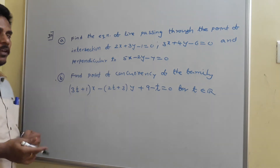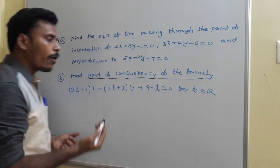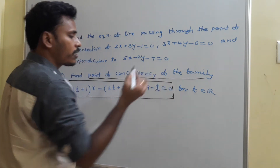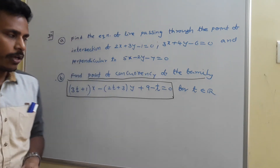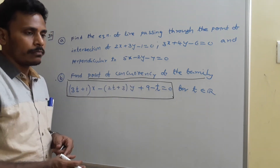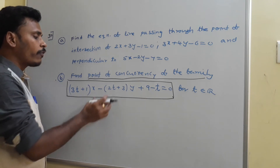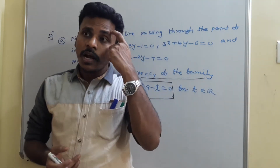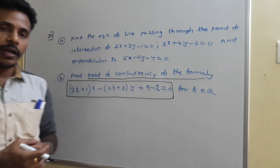I will solve part B first. We need to calculate the point of concurrency of the family, where T belongs to any real value. If you replace T with any number, every value of T gives one line, and since we have infinite real numbers, we get infinite lines — all belonging to the same family, all passing through the same point. We need to find that point of concurrency.